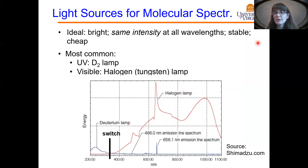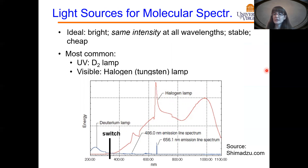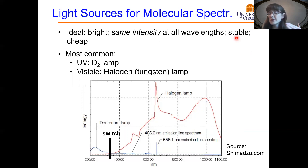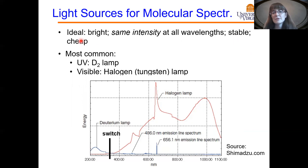As we look at the options for light sources for molecular spectroscopy, the ideal light source would be one that is bright and uniform across all wavelengths, meaning it emits at equal light intensity across all wavelengths in the UV spectrum. It should also be stable over time — we don't want fluctuating lamps when trying to make an analytical measurement. We'd also like it to be inexpensive so that we can afford to replace it when it breaks.